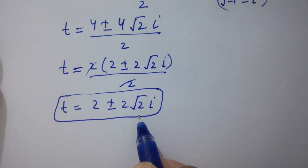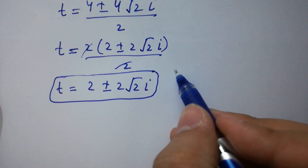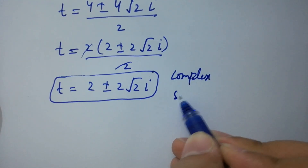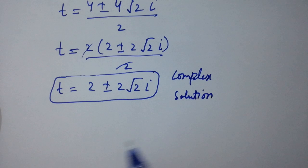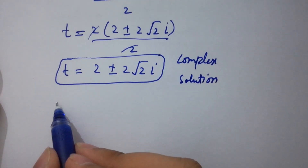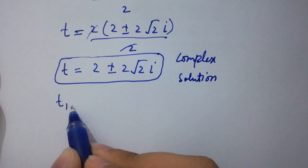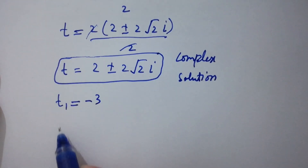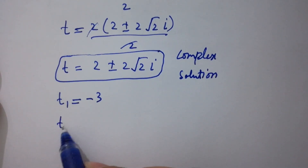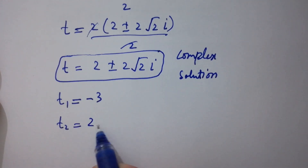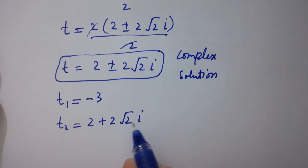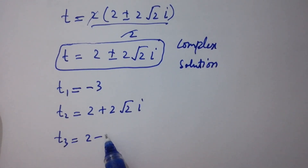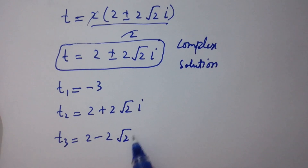These are our complex solutions. So we have three solutions: t1 equals minus 3, t2 equals 2 plus 2 square root of 2 i, and t3 equals 2 minus 2 square root of 2 i.